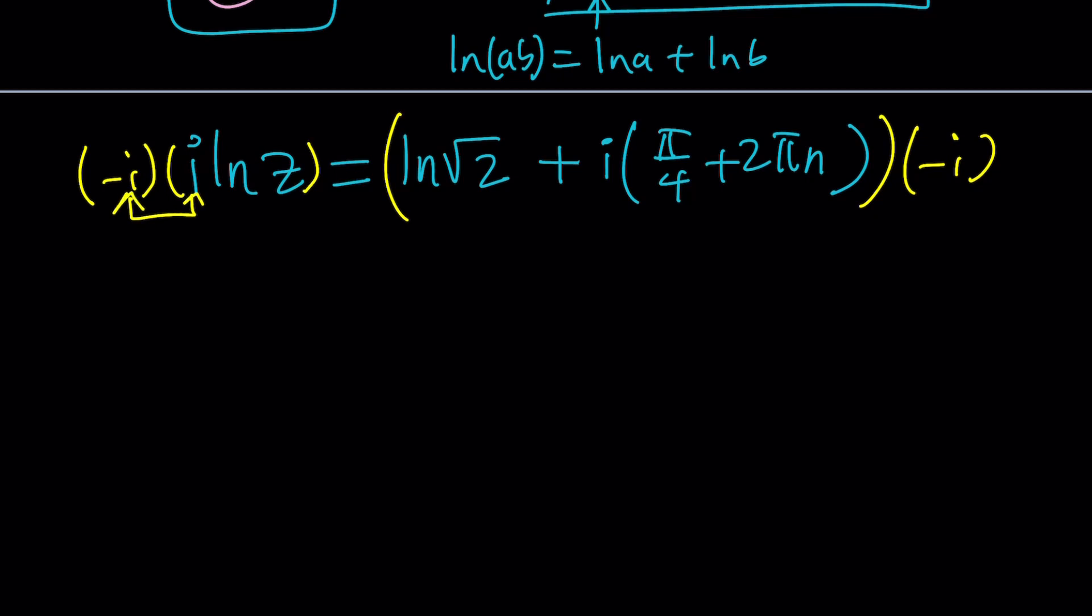Because this is 1 right. Negative i squared is 1 because i squared is negative 1. So this gives us ln z equals negative i squared, again is going to be 1. So we'll get pi over 4 plus 2 pi n minus i times ln square root of 2.